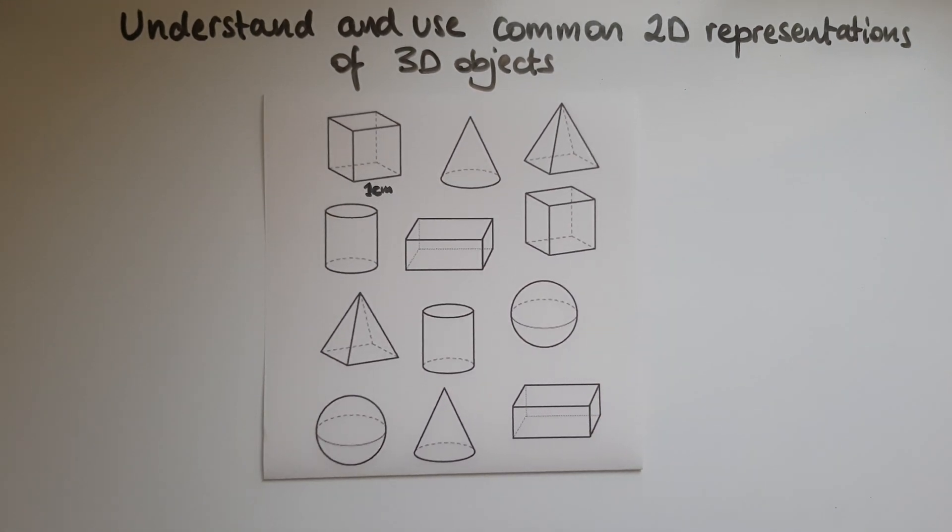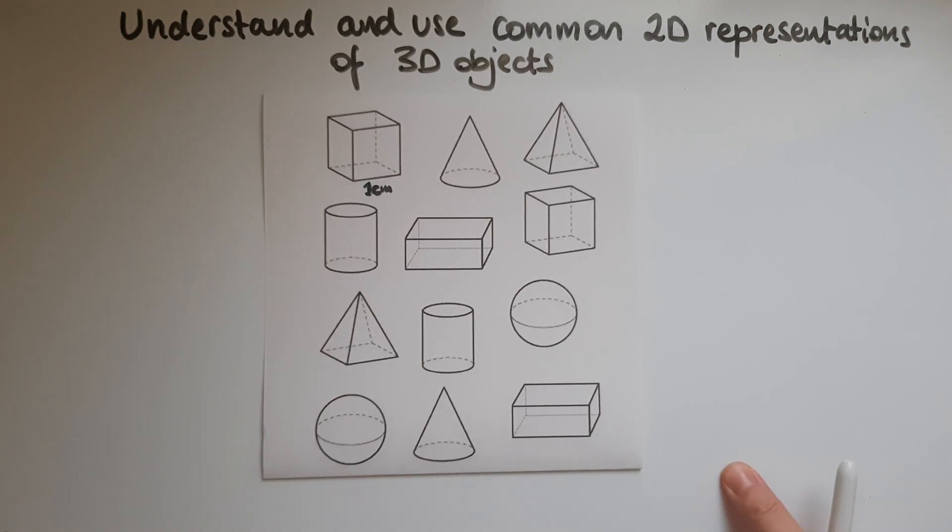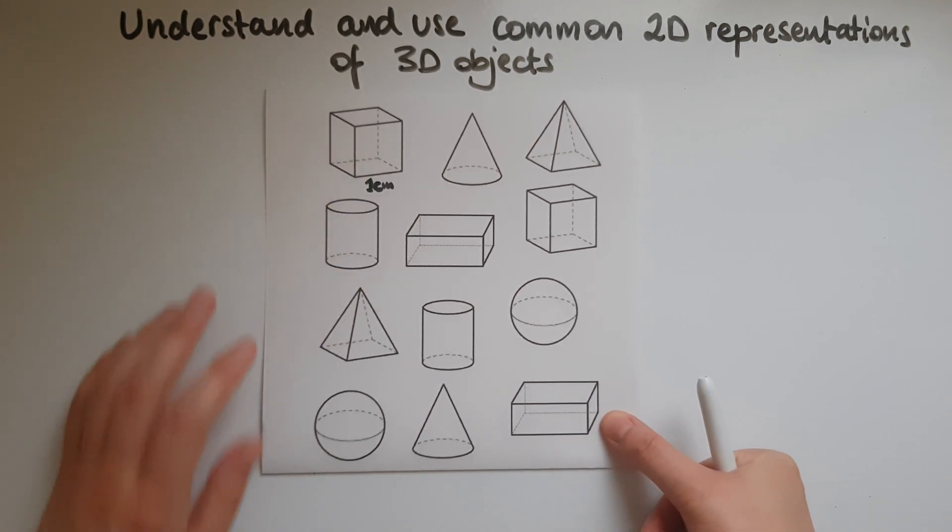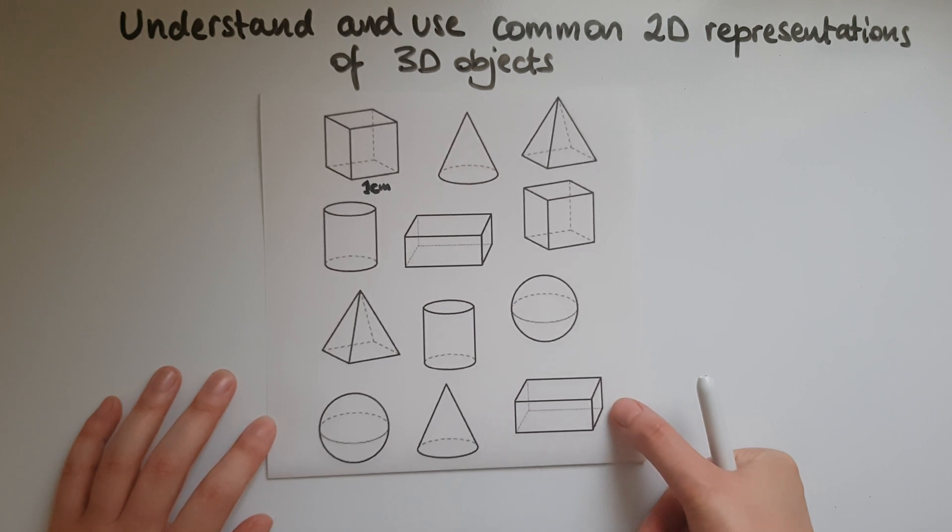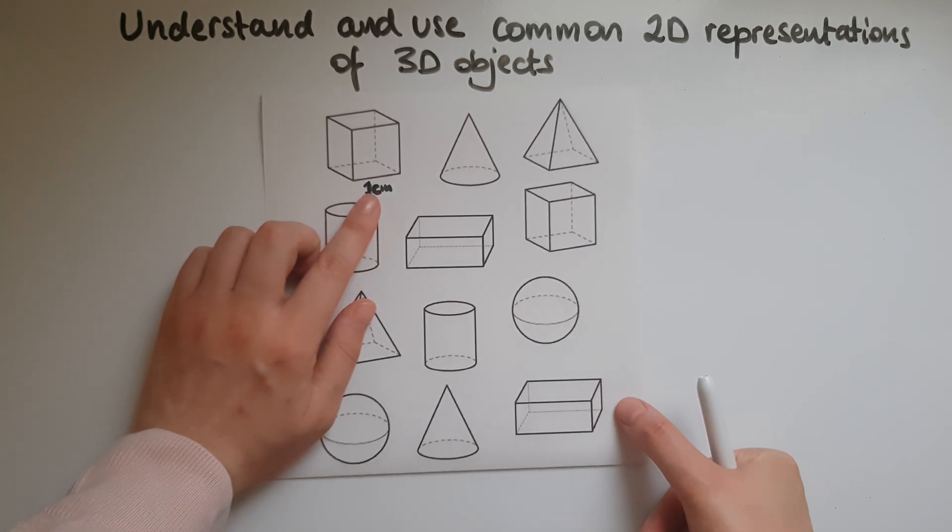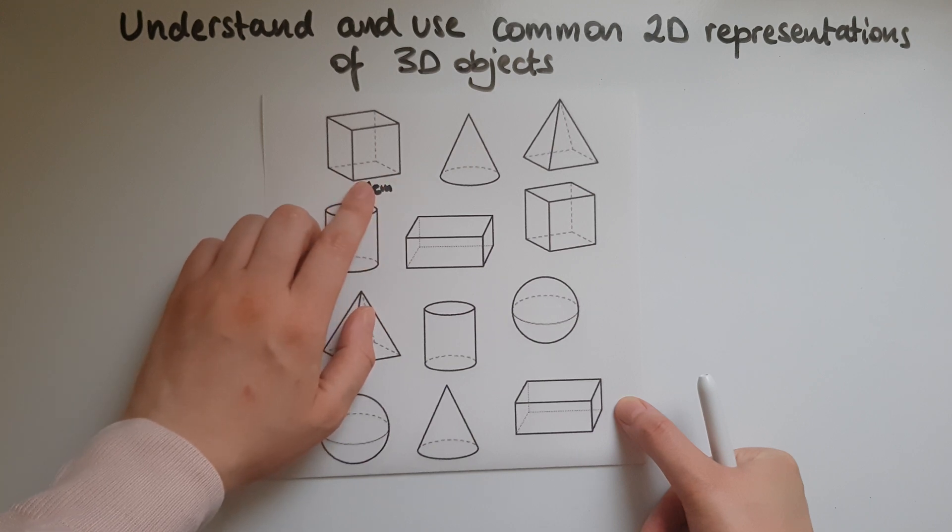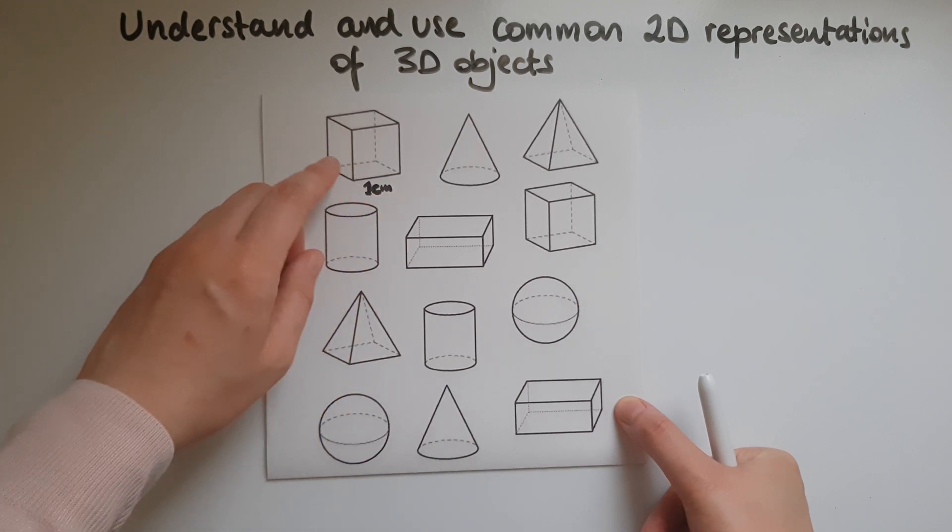If we're given dimensions we should be able to work out surface areas or areas of faces or volumes. So if we're given that this is one centimetre, then we know that this is going to be a centimetre.